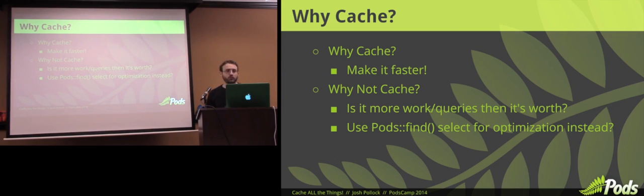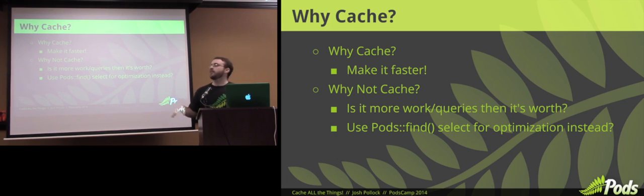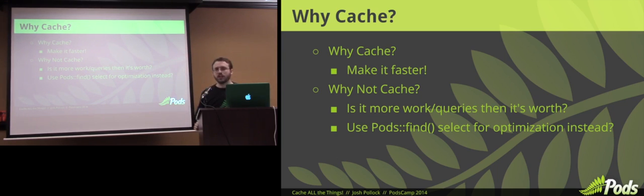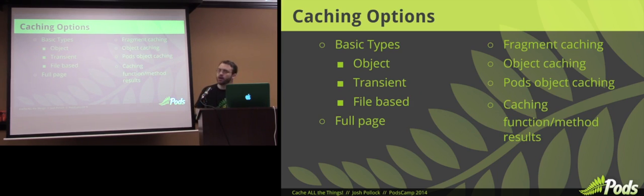So why cache? Because we can make it faster. Why not cache? Because it's more work, more queries than it's worth. Sometimes that's true. It's all about what your final result is. Also, Scott and Phil are going to get into this later — we can really optimize our queries in Pods. By default it's getting everything we could possibly need. We can do an SQL select. A select parameter in Pods is fine. And sometimes that's the solution. But we're going to talk about our caching options, because a lot of times this is really what we need.